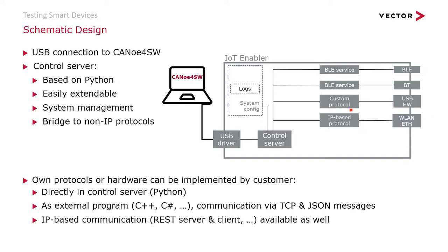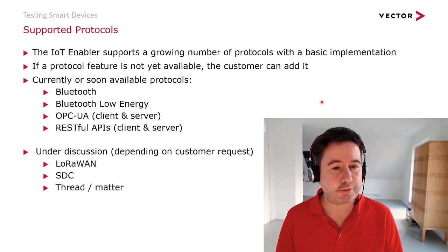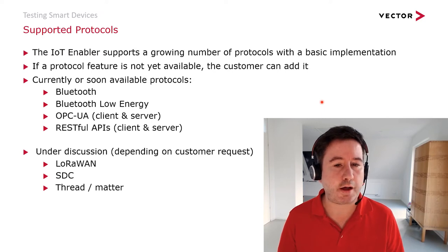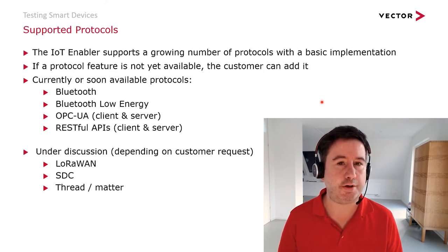We also offer the possibility to provide custom protocols. For example, if you have a proprietary protocol and you want to use the IoT Enabler and Canoo for software to test your device, you can do your own implementation on the IoT Enabler. Our intention is not that the customer has to implement all protocols — there is already support for a wide range of common protocols available on the IoT Enabler.